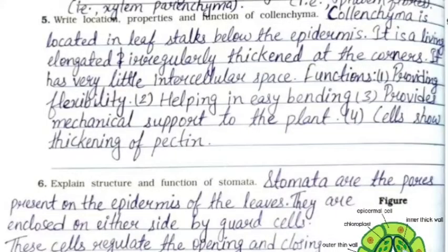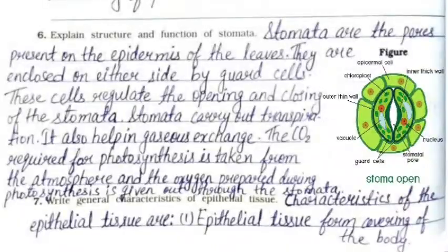Question 5: Write the location, properties, and function of colenchyma. Colenchyma is located in leaf stalks below the epidermis. It is a living, elongated tissue, irregularly thickened at the corners, with very little intercellular space. Functions: providing flexibility, helping in easy bending, providing mechanical support to the plant, and cells show thickening of pectin.